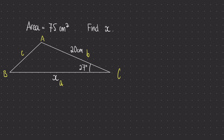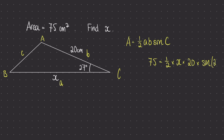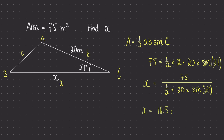We can now write down the area rule for the triangle. Substituting what we know: the area is 75, that was already given to us; a is x, b is 20, and the angle is 27 degrees. Let's divide both sides by a half, by 20, and by sine of 27, to leave us with x as the subject of the formula. We can now place the right-hand side of this equation into the calculator to work out the side length x, which works out to be 16.5 centimetres.